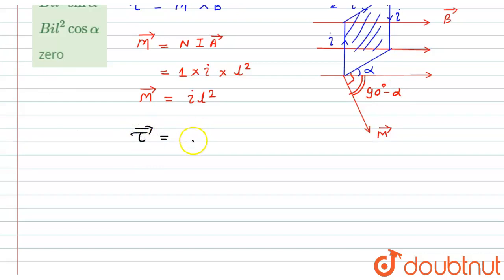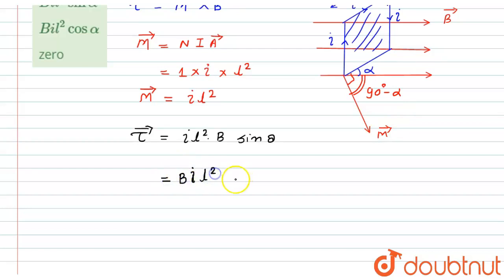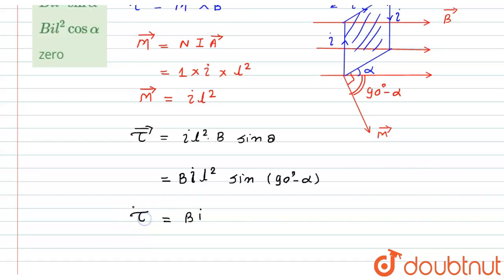The required torque experienced by the current-carrying loop equals the magnetic moment I·l² multiplied by magnetic field B times sine of theta. Here, theta is 90 minus alpha, so this becomes B·I·l²·sin(90 − α). Since sin(90 − θ) = cos(θ), this becomes cos(alpha). So the required torque is B·I·l²·cos(α).